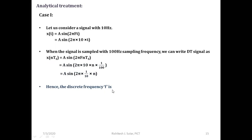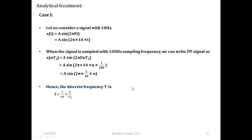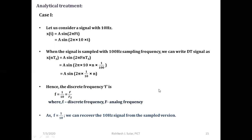The discrete frequency f here is 1/10, where small f is the discrete frequency and capital F is the analog frequency. As small f = 1/10, we can recover the 10 Hz signal from the sampled version.